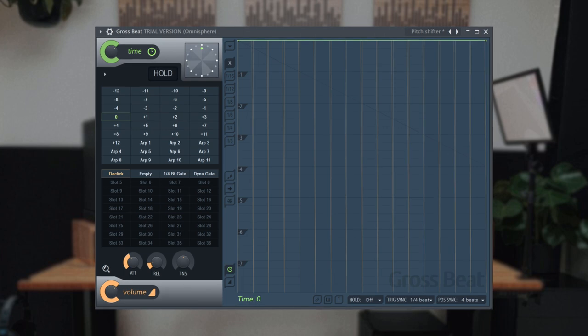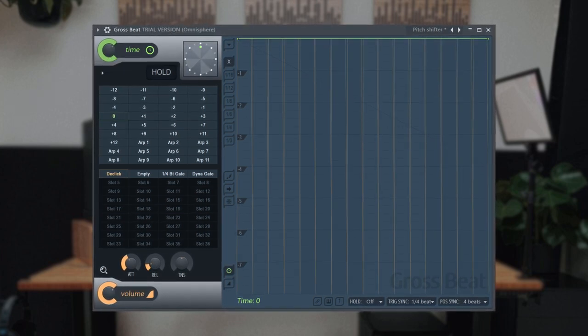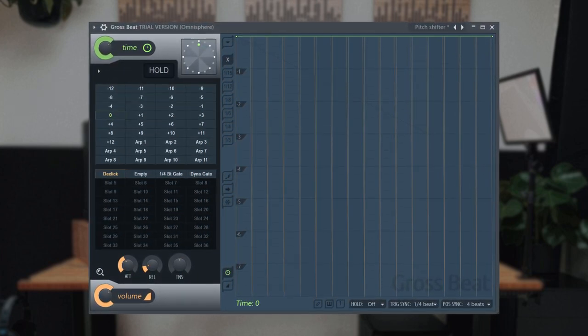Then add some gross beat and use the shifter preset. Set it to zero and increase the attack. This will give you that wobbly effect.